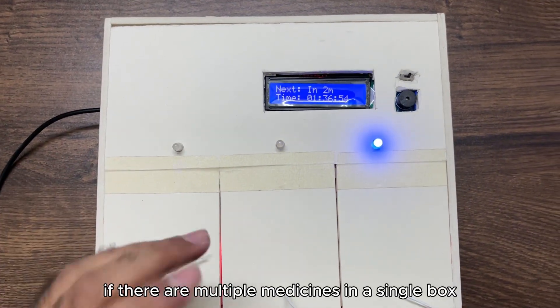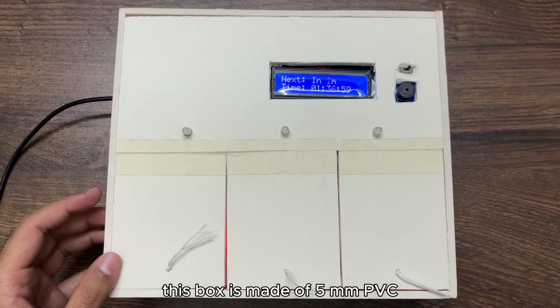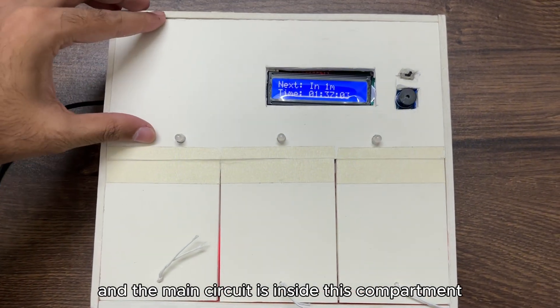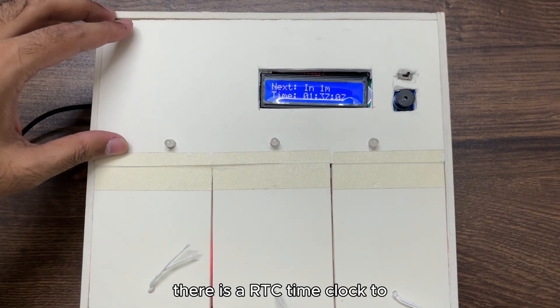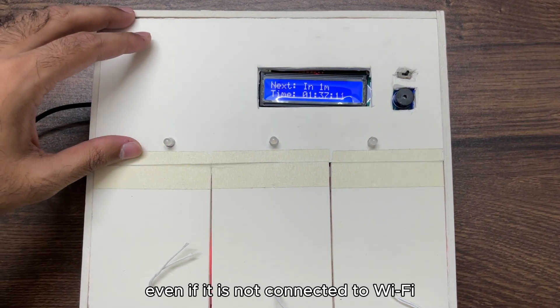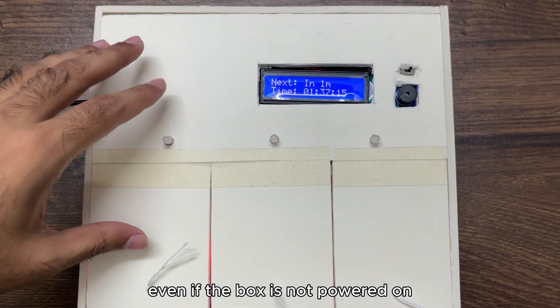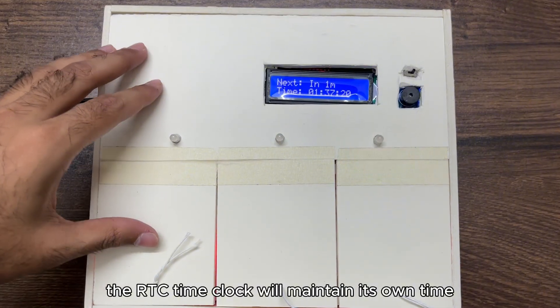This box is made of 5mm PVC and the main circuit is inside this compartment. There is an RTC time clock to maintain the real time clock even if it is not connected to WiFi, even if the box is not powered on. The RTC time clock will maintain its own time.